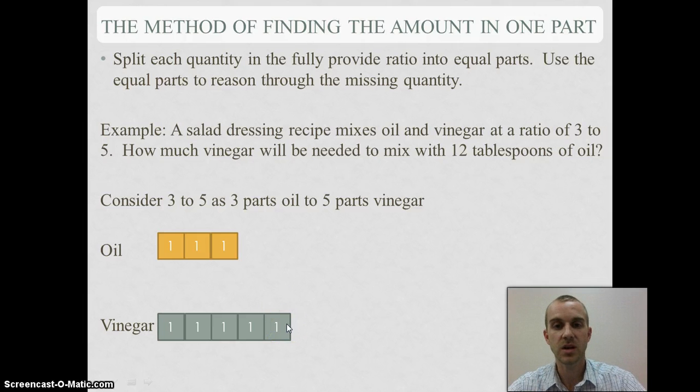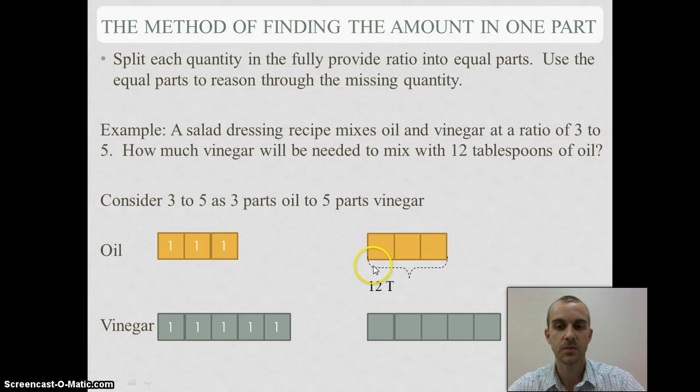Now I need to put it into my new ratio. I know that my 3 parts are now 12 tablespoons. If I want to split them equally among 3, I'm going to divide it into 3 parts. 12 divided by 3 tells me that each part is 4 tablespoons.